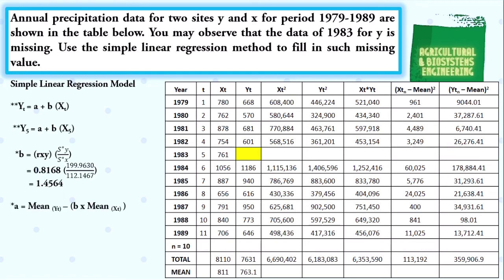Next, we solve for the value of A. To solve for A, we subtract the product of B times the mean of X from the mean of Y. Substituting the values, we have 763.1 minus the product of 1.4564 times 811, giving us A equal to negative 418.0404.